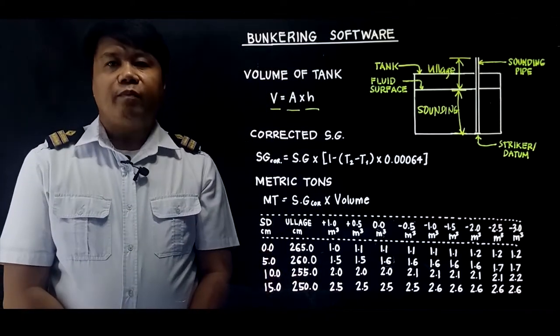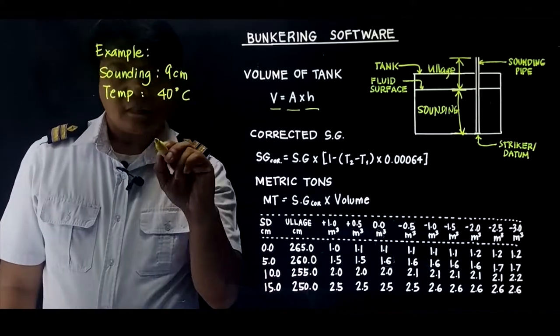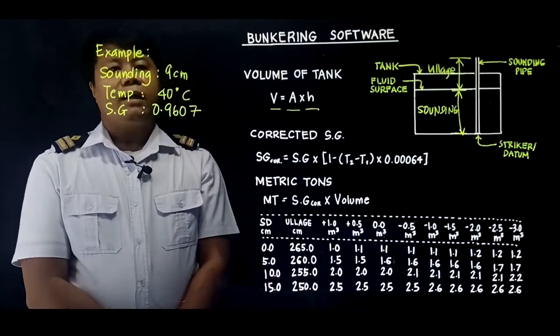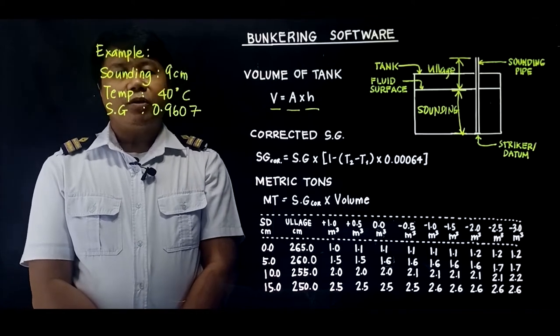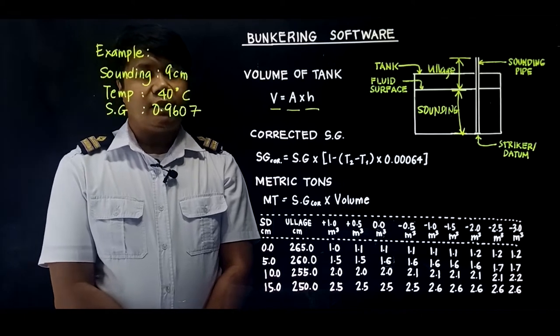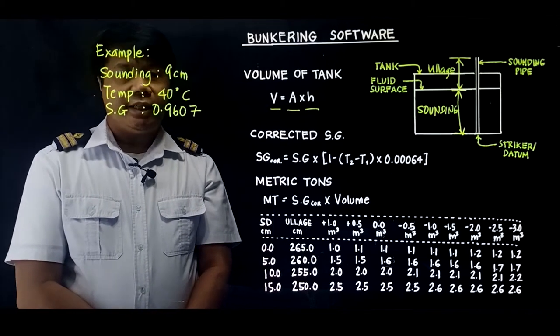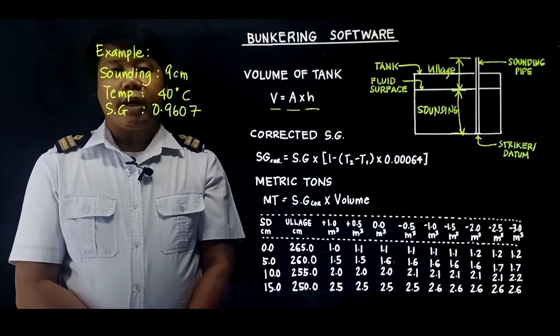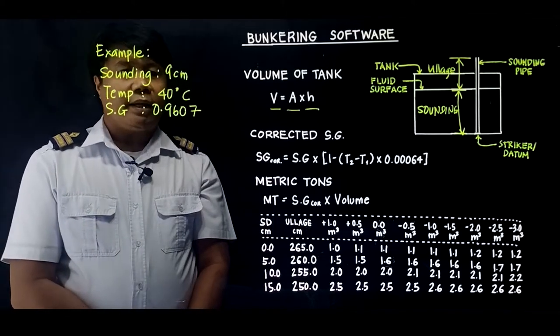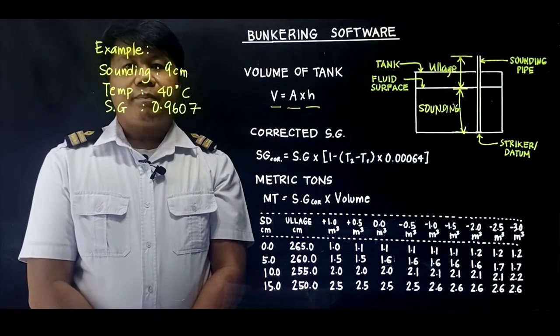So let us solve for this example. The sounding is 9 cm, the temperature is 40 degrees Celsius, and the specific gravity is 0.9607. This specific gravity is being supplied by the barge. For the temperature, you need to take this using the thermometer. And for the sounding, you need to take this by taking the deep sounding.